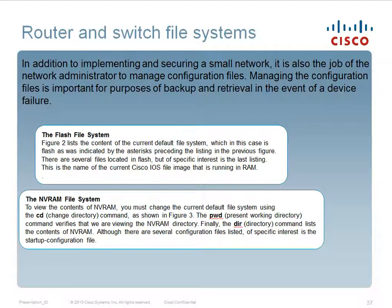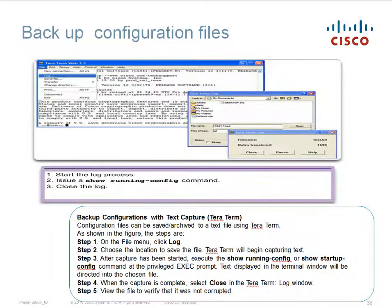Router and switch file system: in addition to implementing and securing a small network, it is also the job of the network administrator to manage configuration files. Managing configuration files is important for backup and retrieval in the event of device failure. The flash file system lists the contents of the current default file system — in this case, flash — including the Cisco IOS image currently running. To view the content of NVRAM, you must change the default file system using the 'cd' (change directory) command. The 'pwd' command verifies that you are viewing the NVRAM directory.